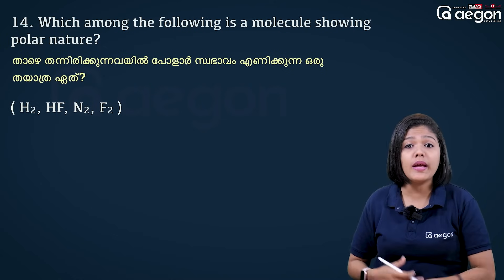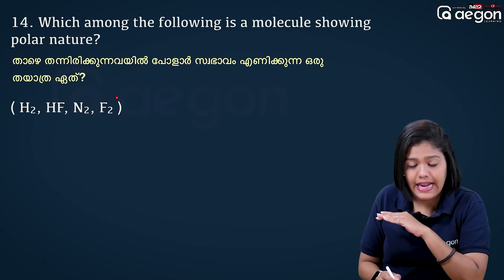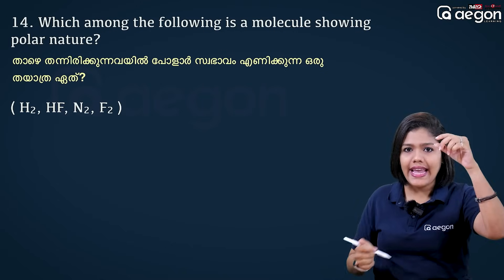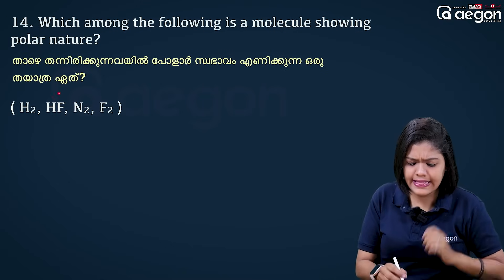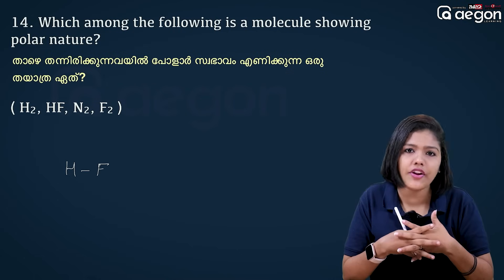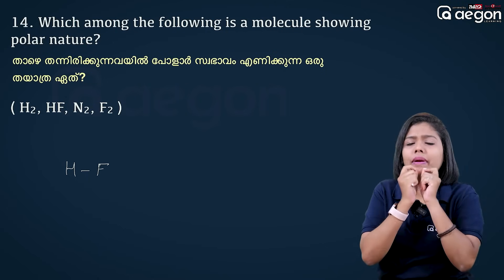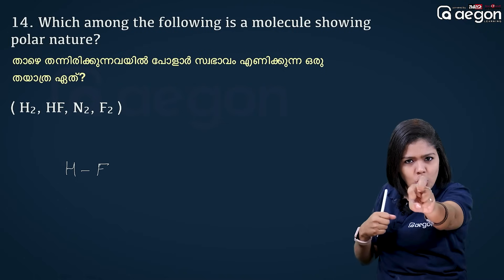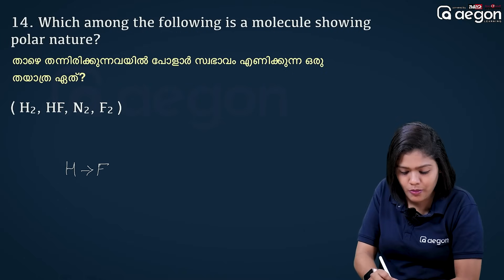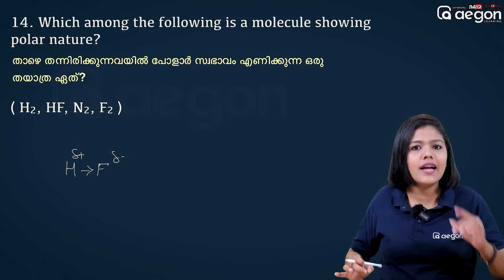Which among the following molecules shows polar nature? The options include hydrogen (H2), hydrogen fluoride (HF), and nitrogen fluoride. H2 and N2 are formed from one type of atom. HF is formed from different atoms — hydrogen and fluorine — which have different electronegativities, so electrons shift toward fluorine.